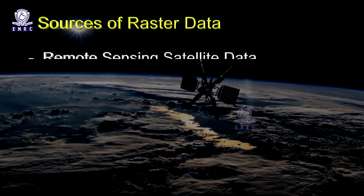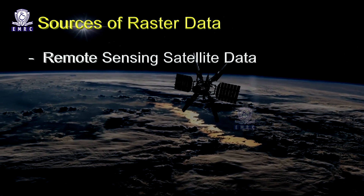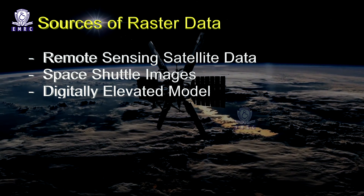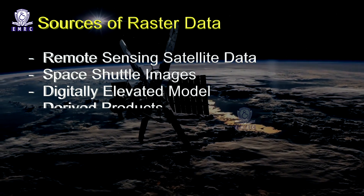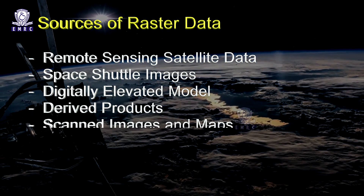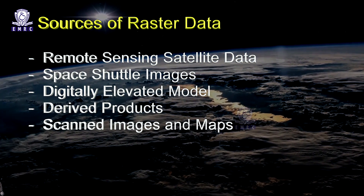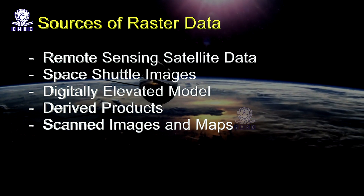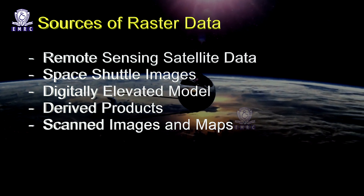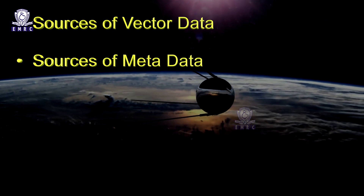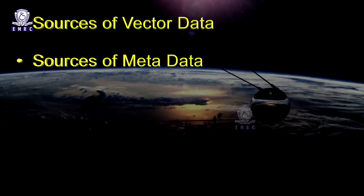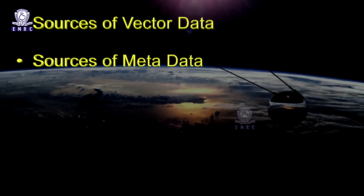Sources of raster data include: Remote Sensing Satellite Data, Space Shuttle Images, Digitally Elevated Models, Derived Products, and Scanned Images and Maps. We will also cover Sources of Vector Data and Sources of Metadata.